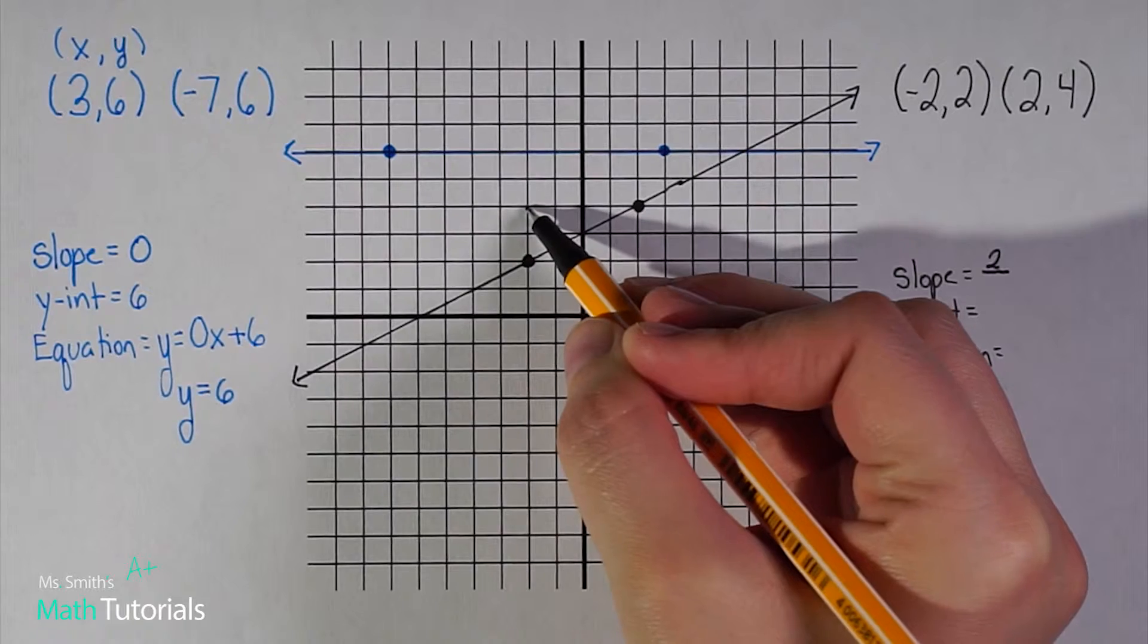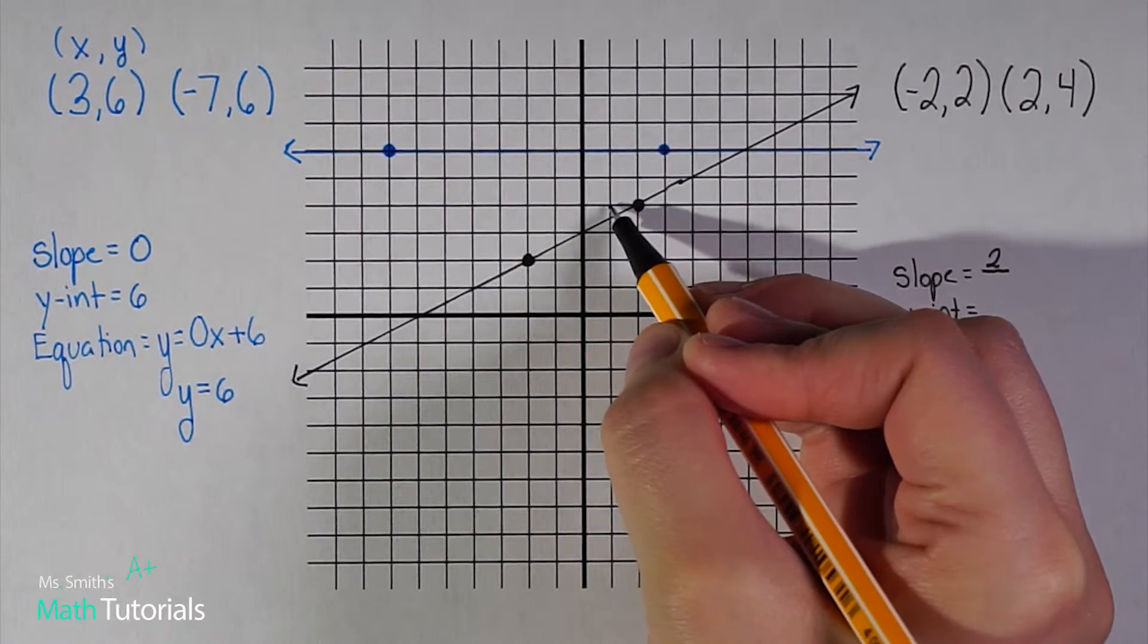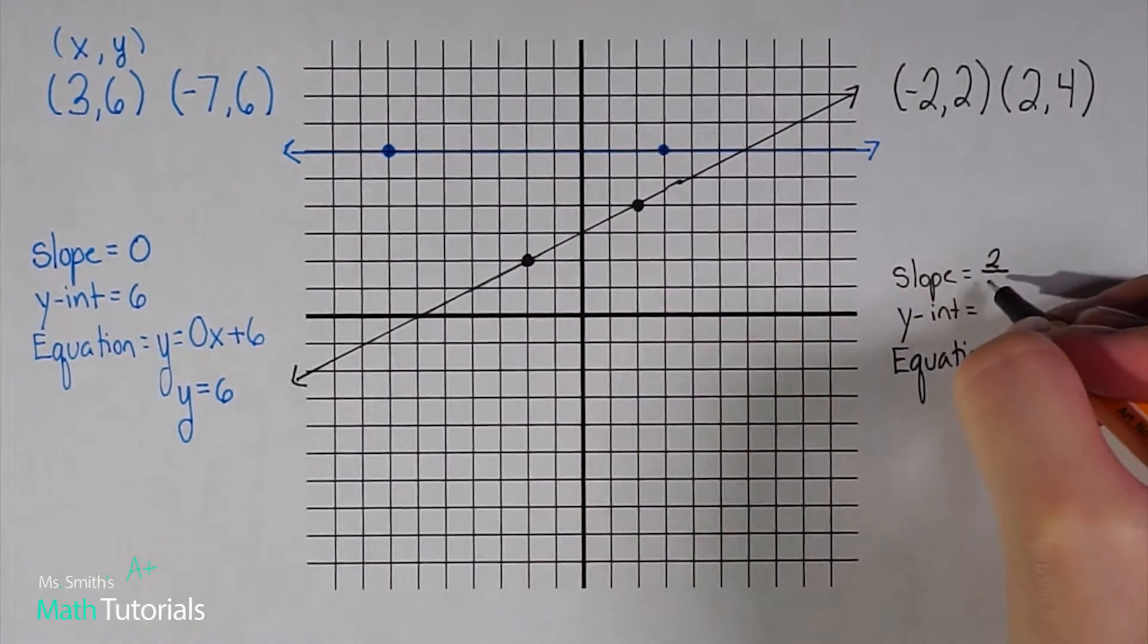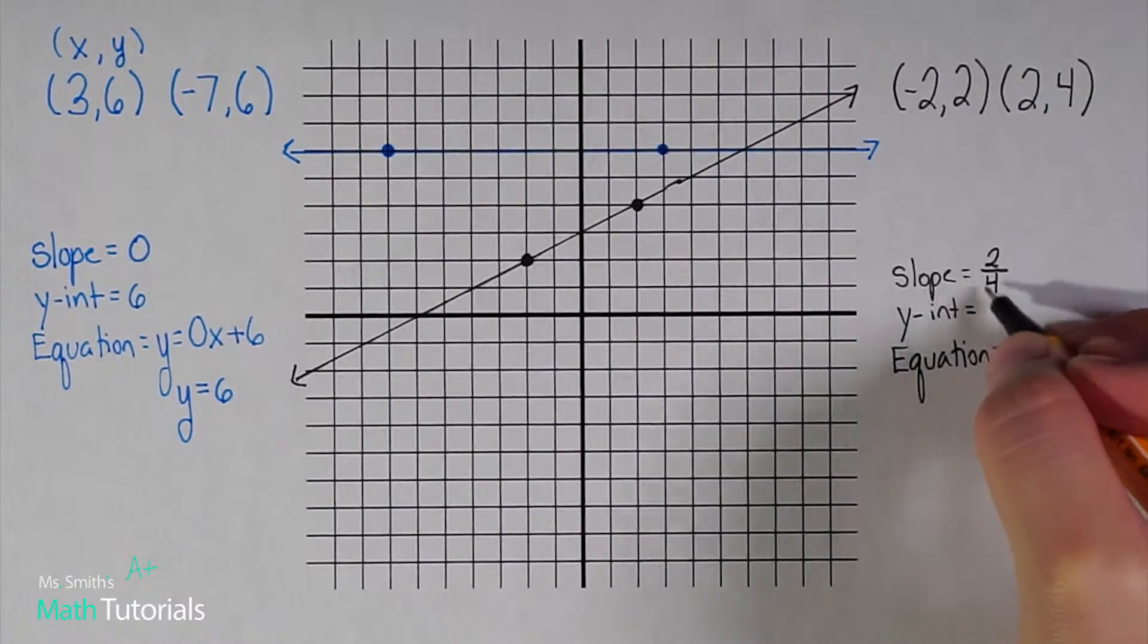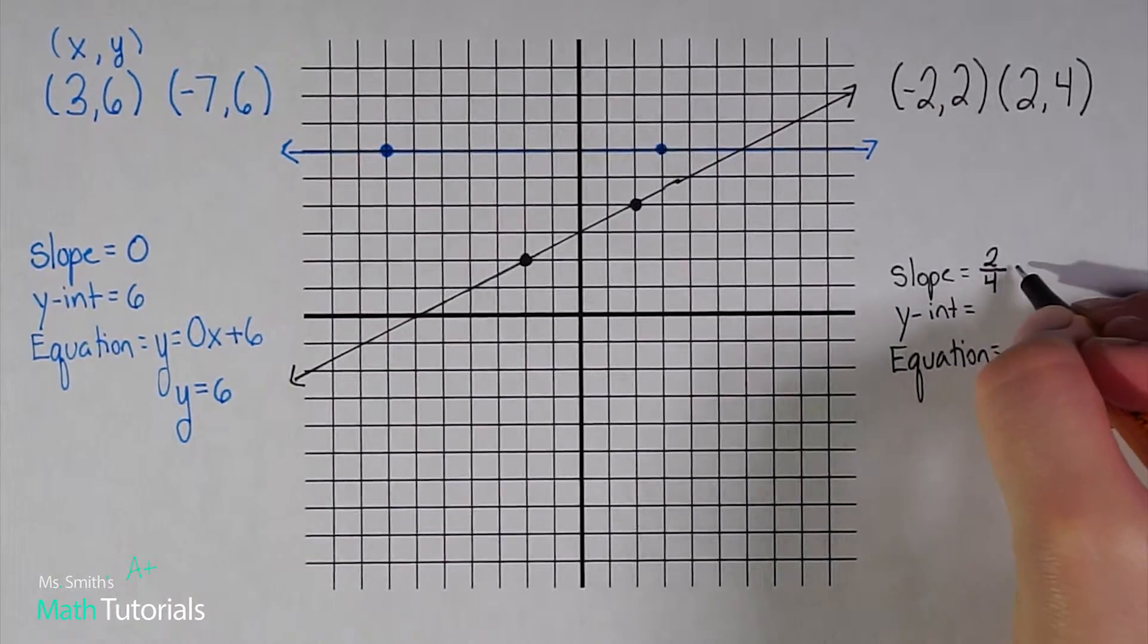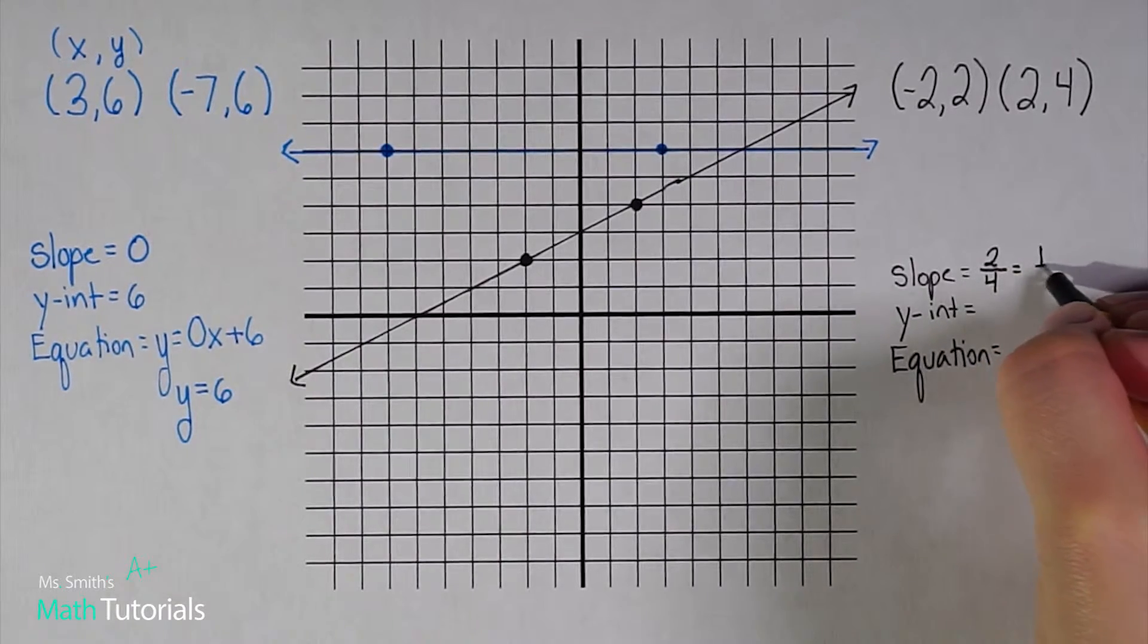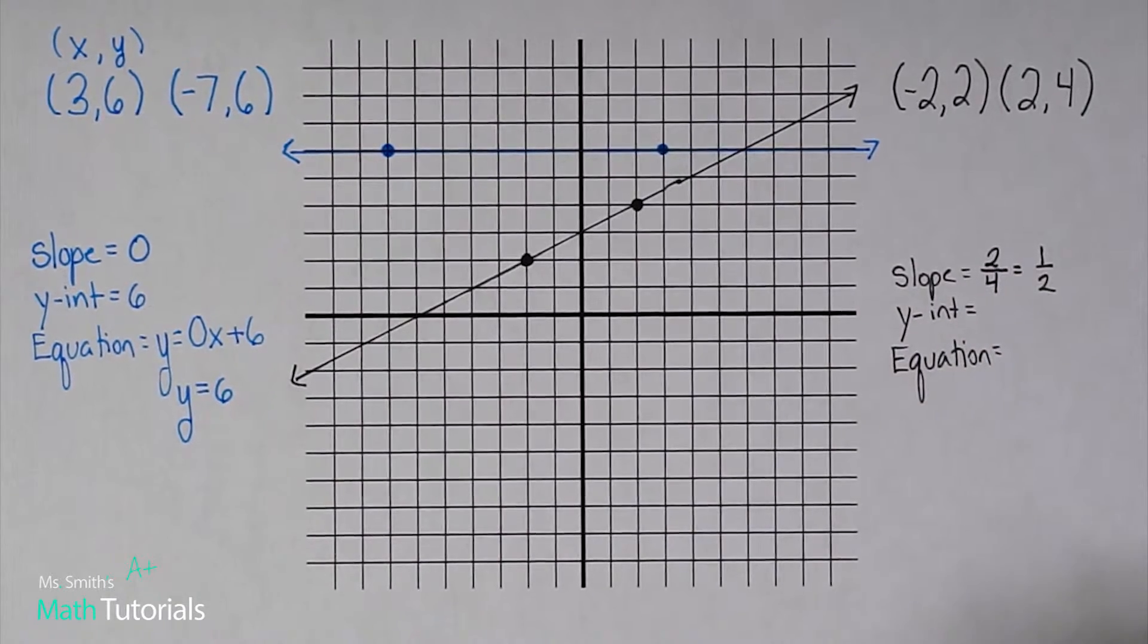So one, two, and now let's count over one, two, three, four. Change in y over change in x. You always want to reduce your slope if possible. Two over four reduces to one half. So I know my slope is one half.